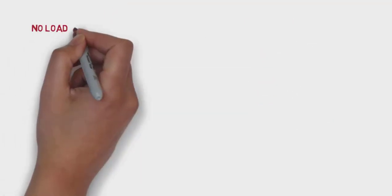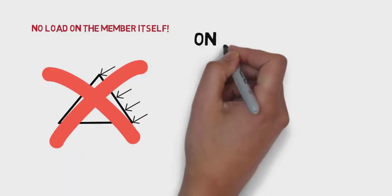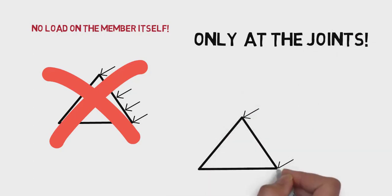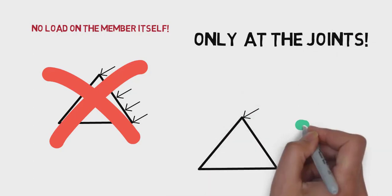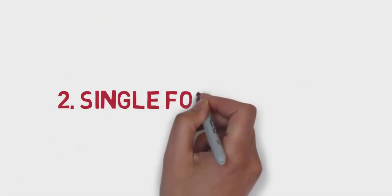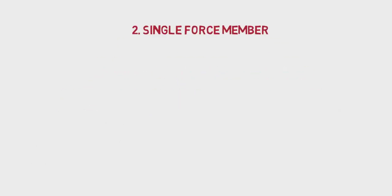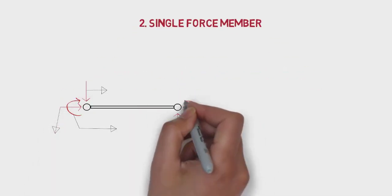There can never be transverse load on the member itself. If there is one, for example self-weight, it must be reassigned to the joint such as in this figure. Half of the load will go to the top joint, the other half to the bottom one. But why? For this we must also know other assumptions.